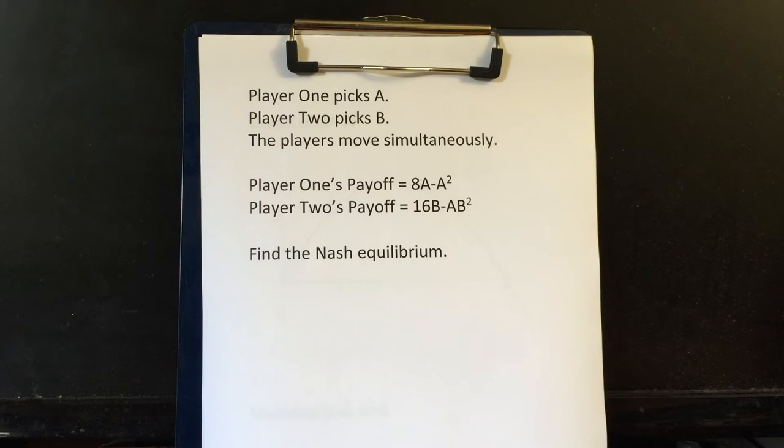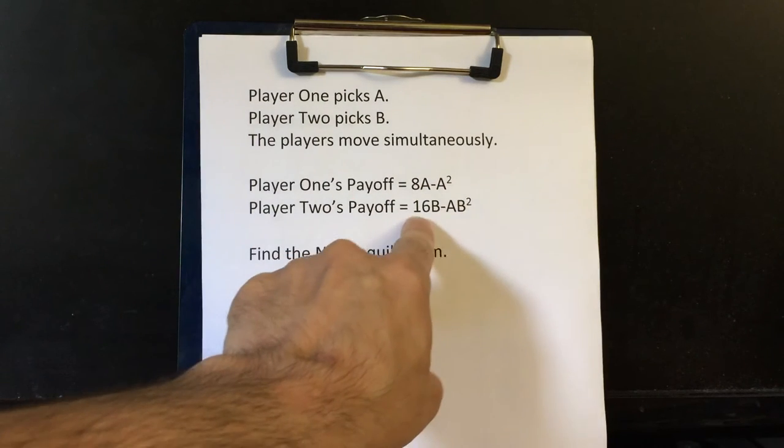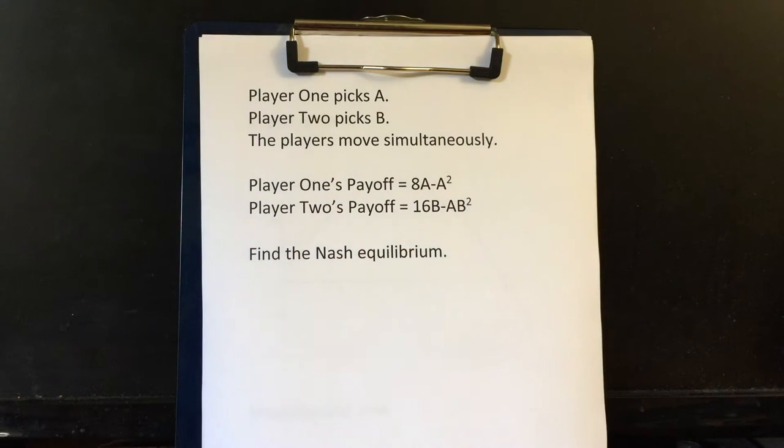So in this game, player one picks A and player two picks B and they move at the exact same time. Player one's payoff is 8A-A² and player two's payoff is 16B-AB². And our goal is to find the Nash equilibrium.